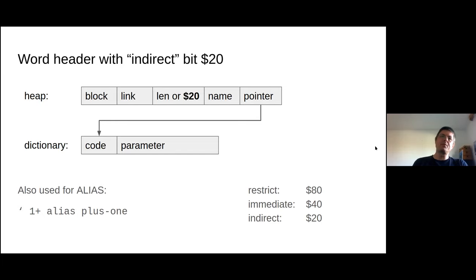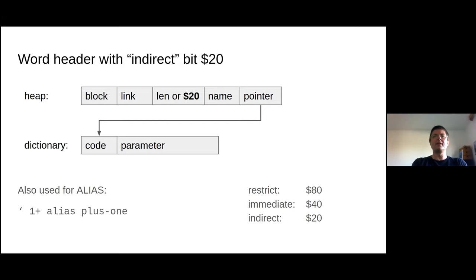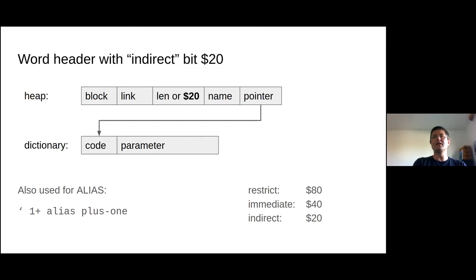Word headers placed on the heap look like this: there's one additional flag next to RESTRICT and IMMEDIATE — that's INDIRECT, the hex 20 bit in the length byte. If a word has that set, after the name doesn't come the code but first a pointer, and the pointer points to the code. VolksForth is an ITC Forth, so the rest is conventional. One nice side use of this indirect/pointer mechanism is to alias words — you can create a second name, maybe in a different vocabulary, for any word.